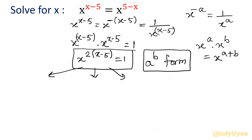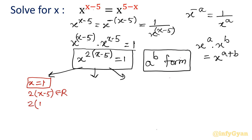Case 1: base is 1, so x = 1, and we must check that the exponent 2(x−5) is a real number. Putting x = 1: 2(1−5) = 2(−4) = −8, which is real. So x = 1 is a valid solution.